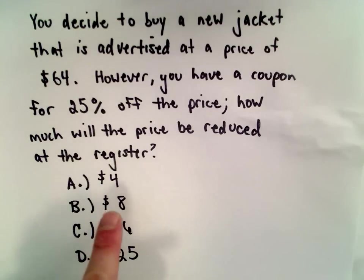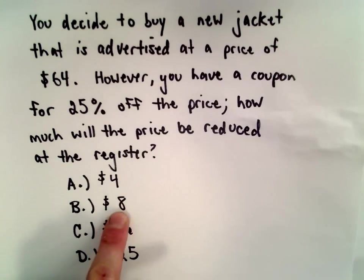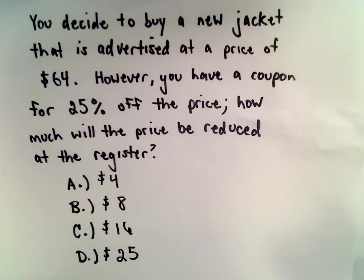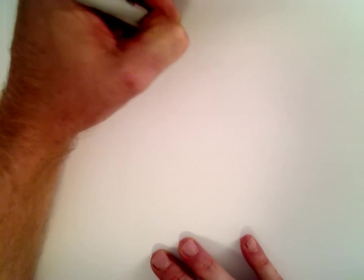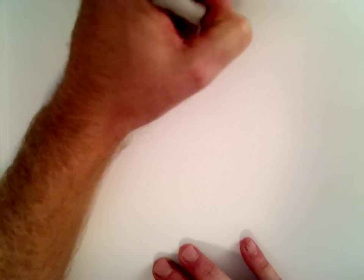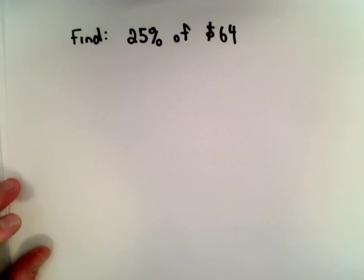We want to know how much will the price be reduced at the register. We have the options of it'll be $4 off, $8 off, $16 off, or $25 off. I want to talk about a few different ways to do this. Really what we want to find is 25% of $64. That's what I'm trying to do.